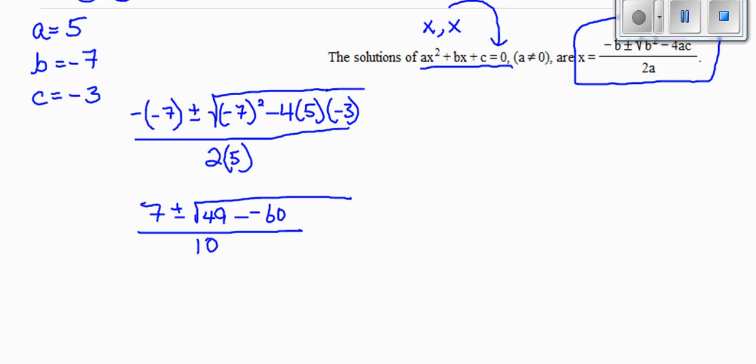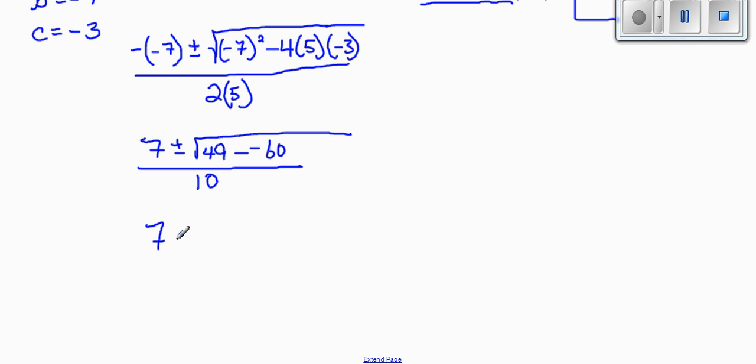Keep on going here. Simplify another step. 7 plus or minus the square root. Two negatives, when I'm subtracting two negatives, I actually add. So I'm going to get 109 over 10.